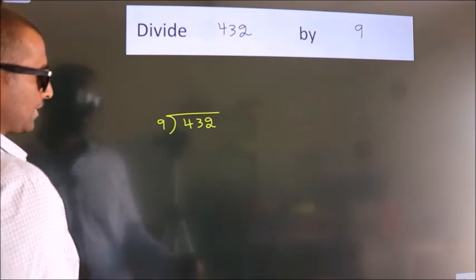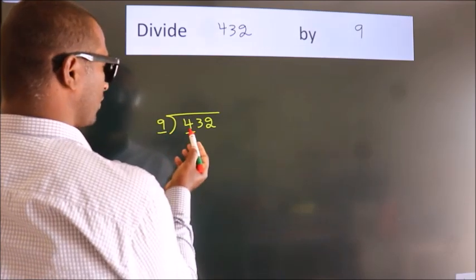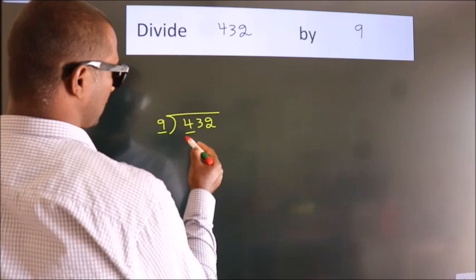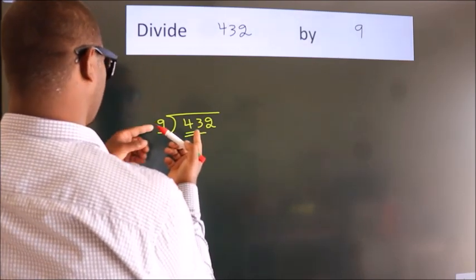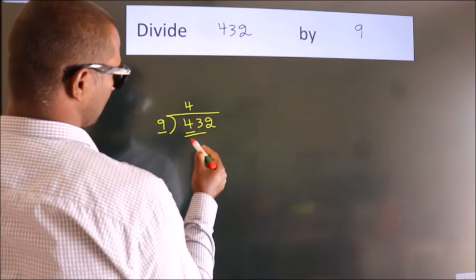Next, here we have 4, here 9. 4 smaller than 9, so we should take two numbers, 43. A number close to 43 in 9 table is 9 fours 36.